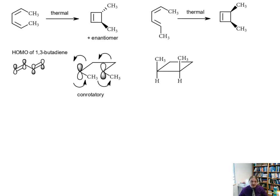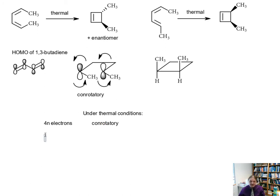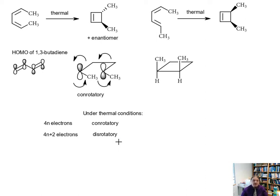To summarize: under thermal conditions — which doesn't always mean we have to add heat, though some of these reactions do require it — systems that have 4N electrons, such as butadiene, undergo these reactions in a conrotatory fashion. Systems with 4N+2 electrons, so 6 electrons, undergo these kinds of reactions in a disrotatory fashion. In the next video we'll go into the stereochemistry of these reactions under photochemical conditions. Thank you for watching.